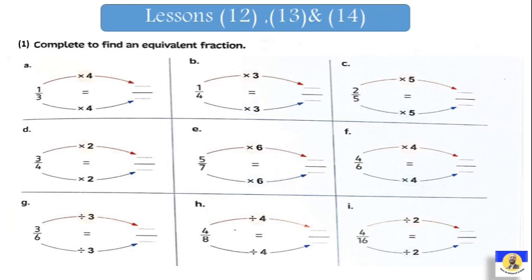Equivalent fraction — we have two fractions that are the same. We can find the equivalent fraction by multiplying or dividing the numerator and denominator by the same number. If we want to get an equivalent fraction, we can do so by multiplying or dividing up and down by the same number.